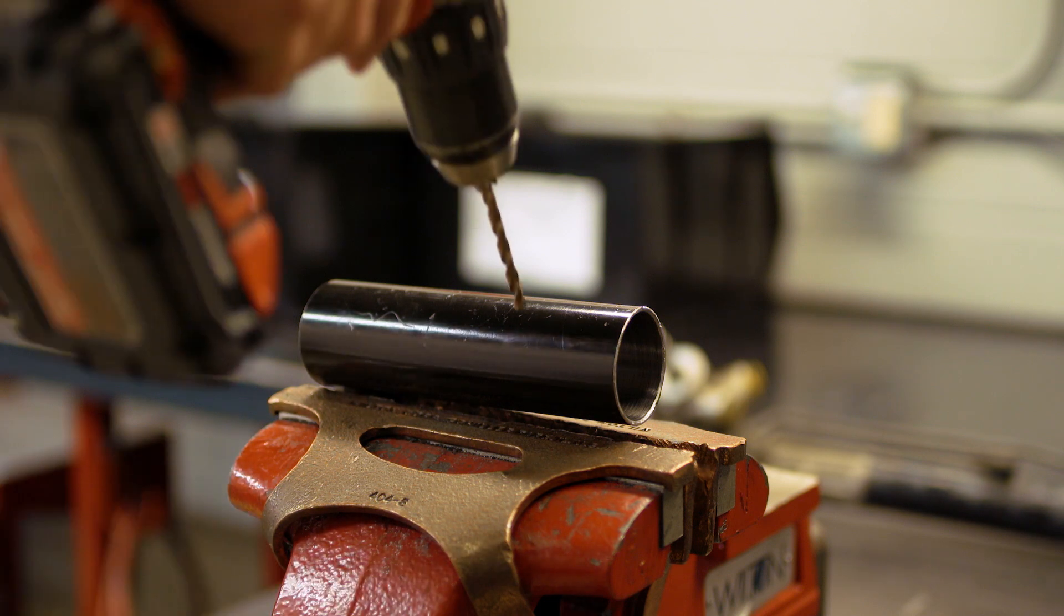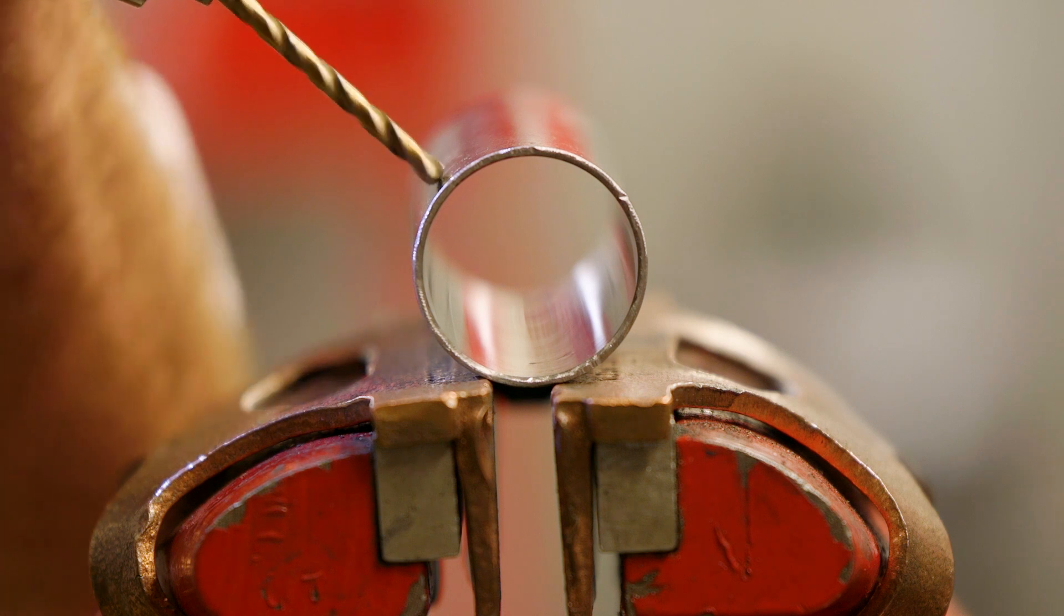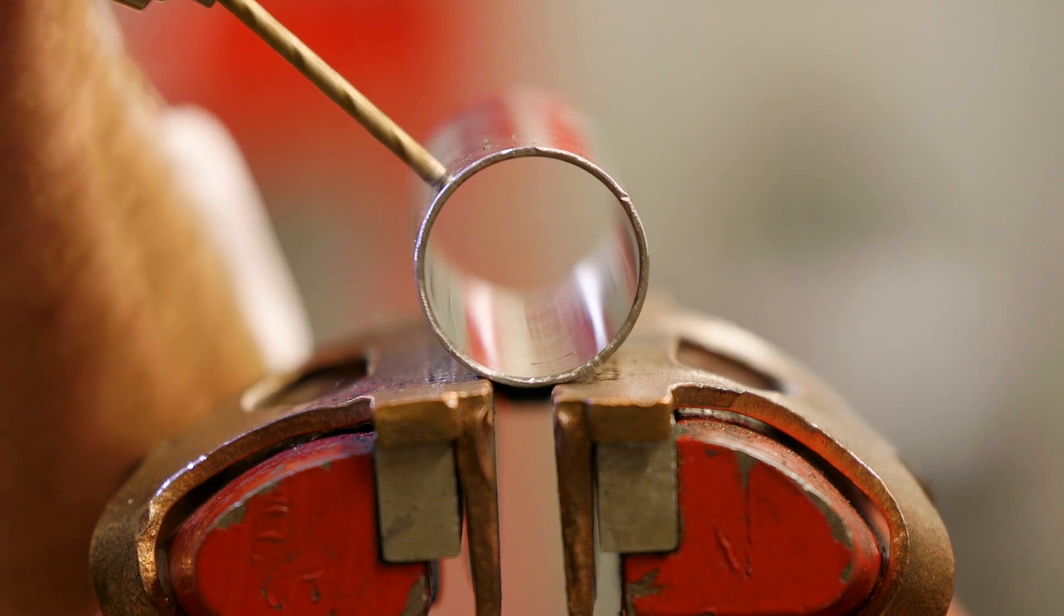To over exaggerate our point here we're going to drill 12 fresh holes. That'll leave the surface area way worse than anything you'll see inside your rack housing.